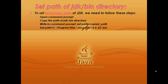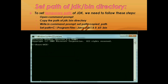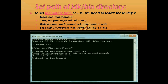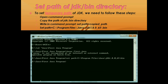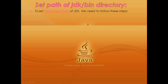For better understanding, watch in this video how to set a temporary path. Open command prompt and go to the path where your Java code is present. This is the directory where my Java file is present. If I compile my file, it will give an error because we have not set the JDK path. So we paste the JDK path, just enter to set it. And now if we compile it, it will compile.